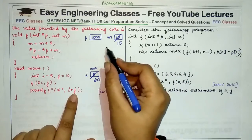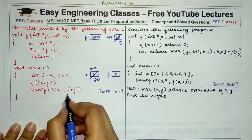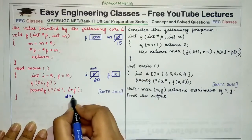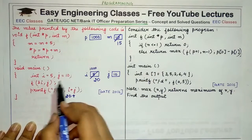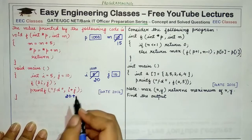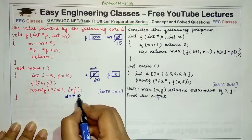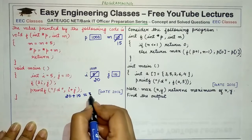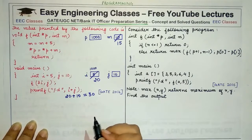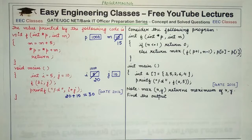After this computation we return, and on return we print the value i plus j. i has been changed by function f, its value is 20, and j is still unchanged because it was passed by value and not by reference. So j is still 10 and the printed value would be 20 plus 10, which equals 30.